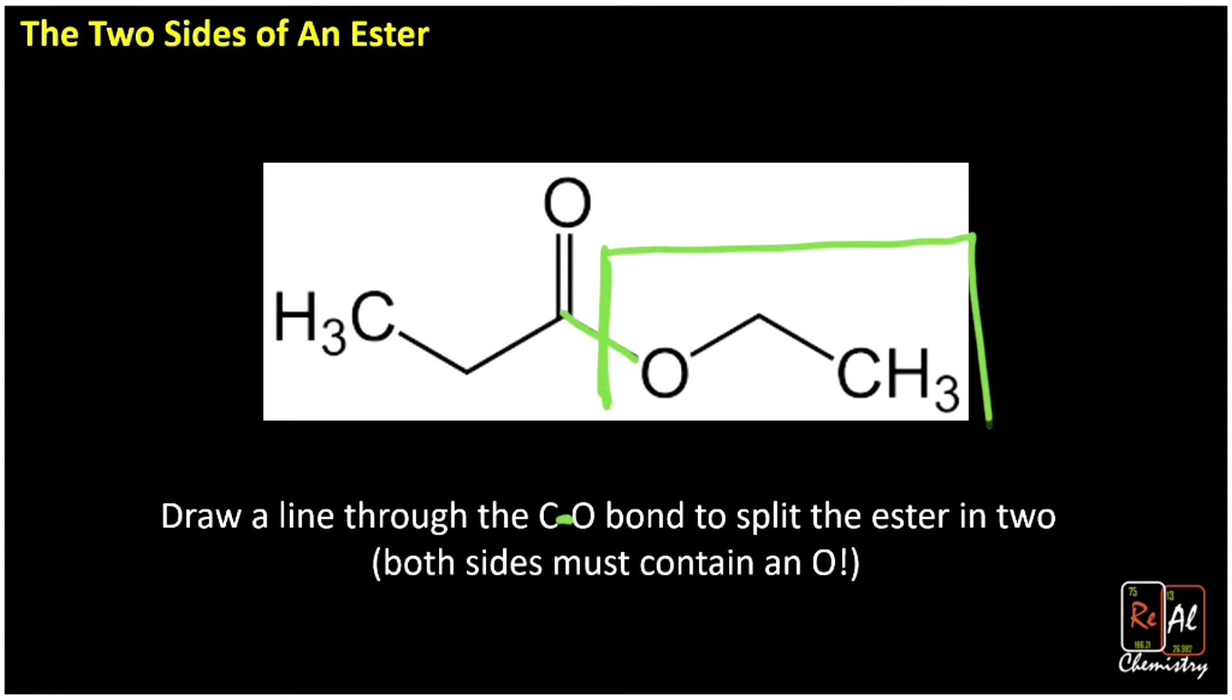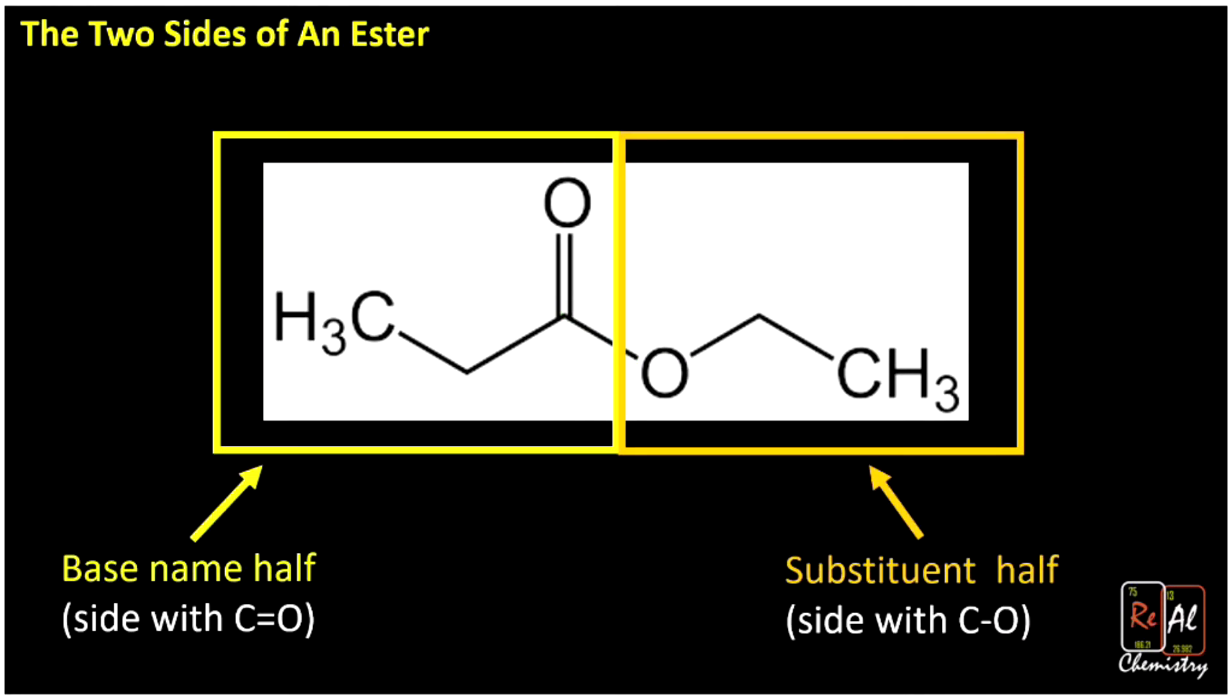So we're going to get a half that I've highlighted there in green, and we'll get a half that I've highlighted here in yellow. Those are the two halves of the molecule. Each one of them is going to give us a part of the name, and that's why it's so important. So this side on the left is going to give us what we call the base name. It's going to go basically in the base name spot of our molecule. Whereas the one on the right we're going to see gets a substituent-like name.